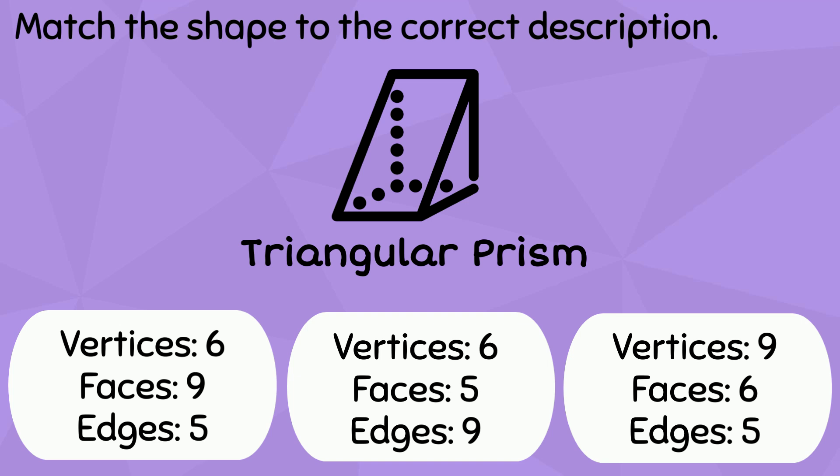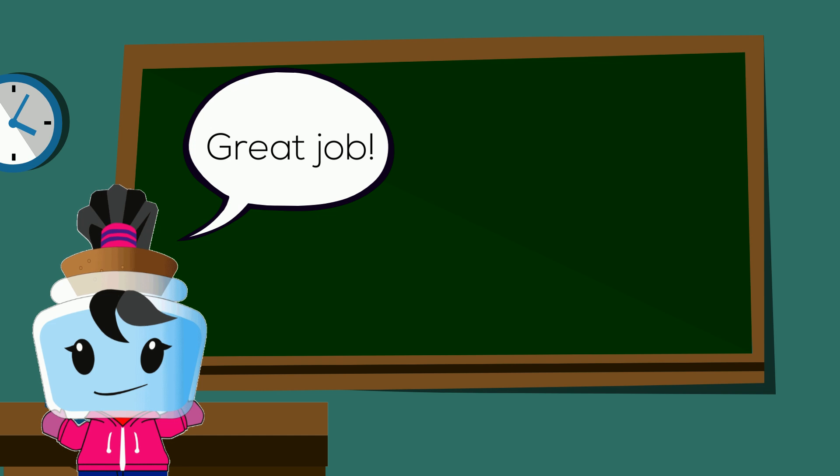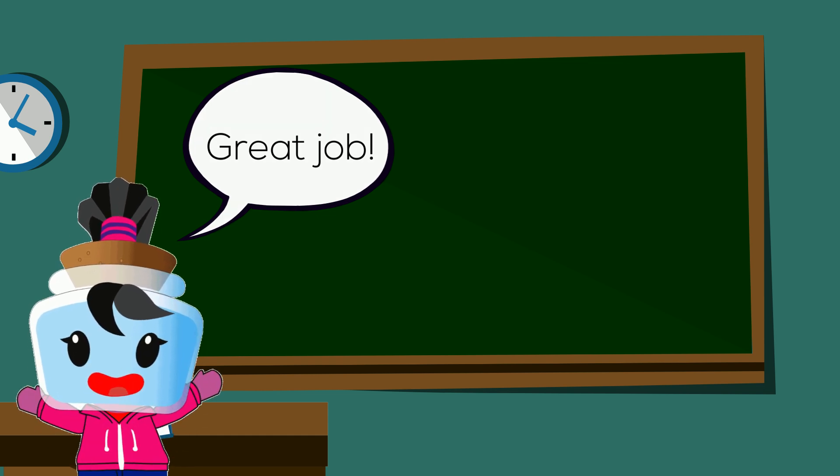A triangular prism has six vertices, five faces, and nine edges. This shape is made of two triangle faces that are connected using three rectangles. Great job!